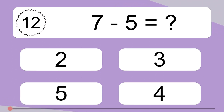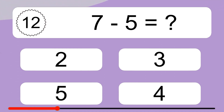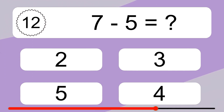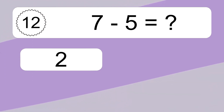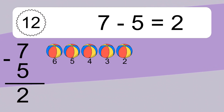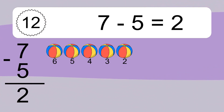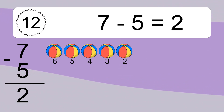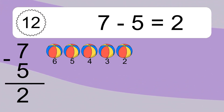7 minus 5 equals what? 7 minus 5 equals 2. Let's count it: 6, 5, 4, 3, 2.